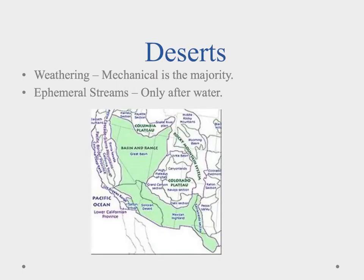Deserts are defined by their noticeable lack of water — we don't see a lot of rainfall throughout the year. But we still have some of the same processes we see in more temperate or tropical regions. We're still going to have weathering occur, but in deserts it tends to be more mechanical. We're not going to have as much chemical weathering because of the limitation in the amount of water we have — the majority of it is going to be mechanical weathering.